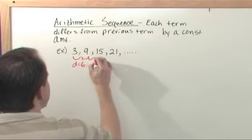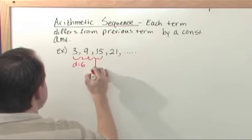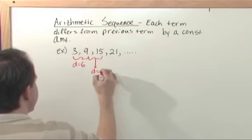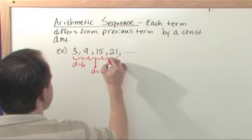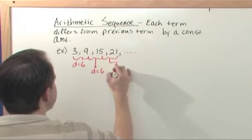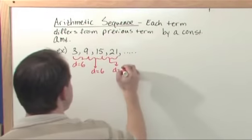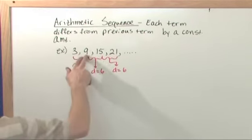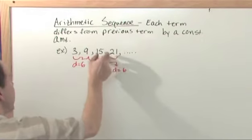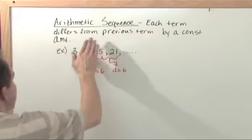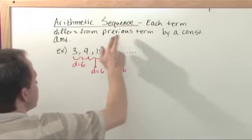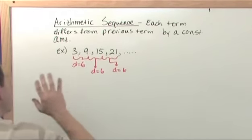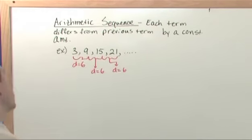What is the difference between 15 and 21? This d is also equal to 6. So you see, with the pattern here, each element in the sequence differs by the previous element by a constant amount. That's exactly what this says. Each term differs from the previous term by a constant amount. This is an arithmetic sequence.